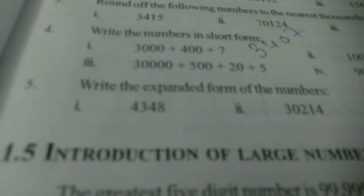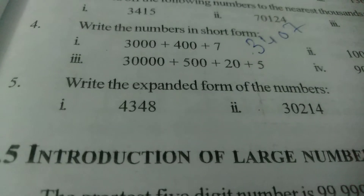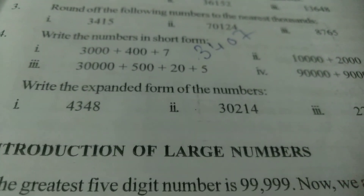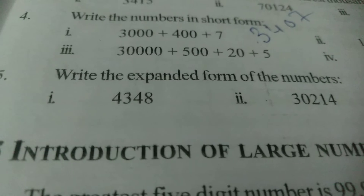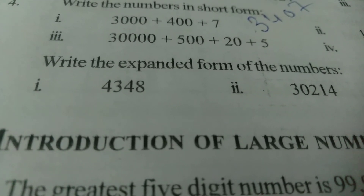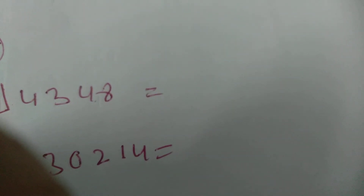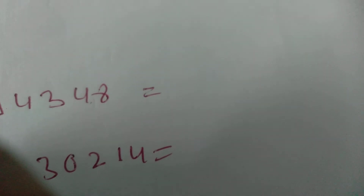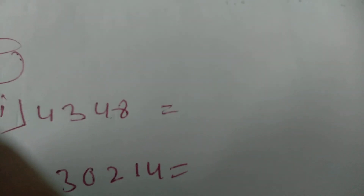Next is the fifth question: write the expanded form of the numbers. The given numbers you have to write in expanded form. First question is 4,348. In 10 there is 1 zero, in 100 there are 2 zeros, in 1,000 there are 3 zeros, in 10,000 there are 4 zeros.